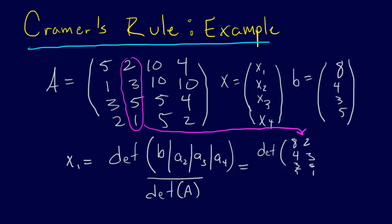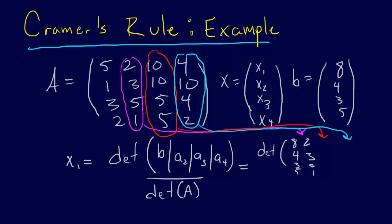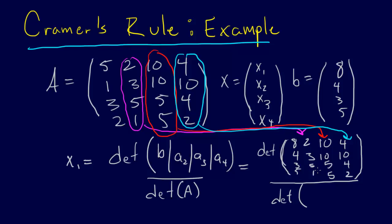Now we take the next column and stick it in here, then take the next column in blue, and stick it in next. So writing those in: 10, 10, 5, 5 for the third column, and 4, 10, 4, 2 for the fourth column — and that is the numerator. Over the determinant of A, which is 5, 1, 3, 2 in the first column, 2, 3, 5, 1; 10, 4, 10, 5; and 5, 4, 10, 4, 2.